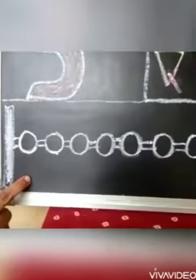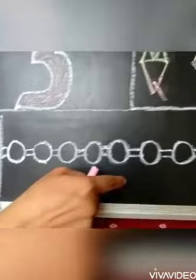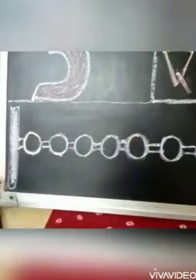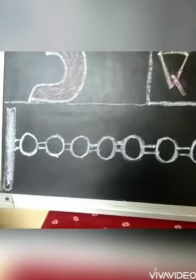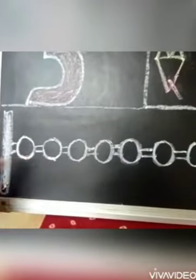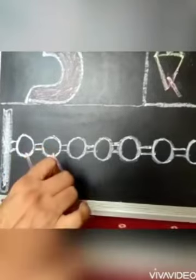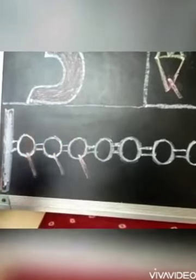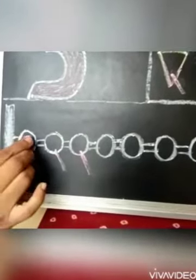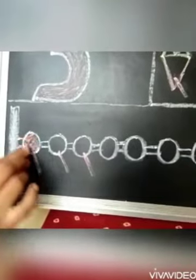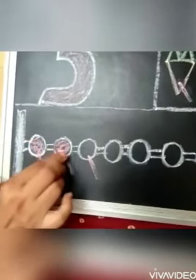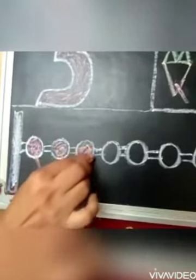And now children, do you remember this? Yes, this is abacus. And all these are beads. But children, we have to count only 3 beads. Now start counting beads. 1, 2 and 3. And we have to stop here. And now we have to color only in 3 beads children. Always remember.